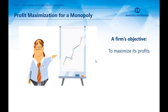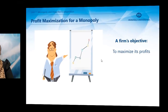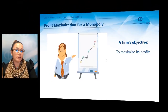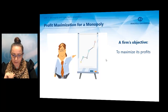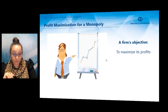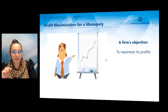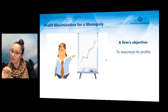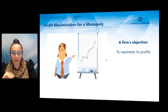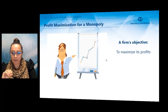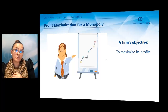When talking about profit maximization for a monopoly, a firm's primary objective is to maximize its profits. Profit equals total revenue minus total cost. A monopoly, just like a competitive firm, maximizes profits at the quantity where marginal revenue equals marginal cost for the last unit produced. So what is the difference between a competitive firm and a monopolist?